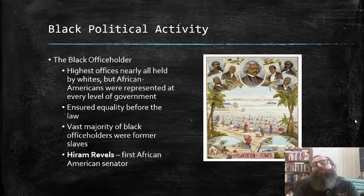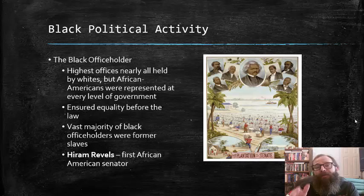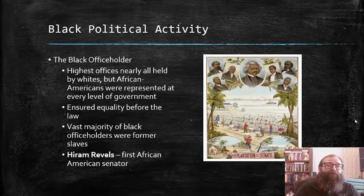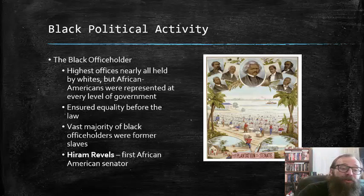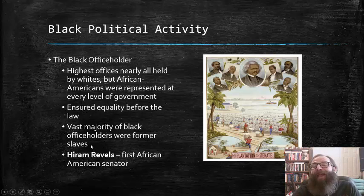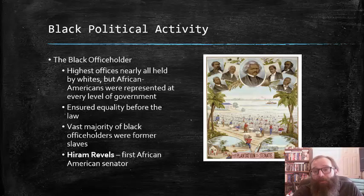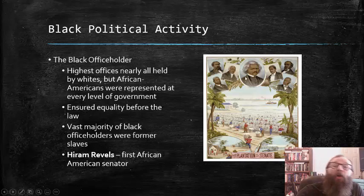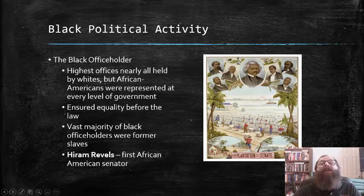While most of these black officeholders were at the small-scale town, city, county, and to some degree state-level offices, there were some who were elected to national office, including Mr. Hiram Revels. He was the first African American senator in United States history. Mr. Revels can be seen here in the center of this illustration, along with some of the other African American men who were elected to political office during the period of Radical Reconstruction.